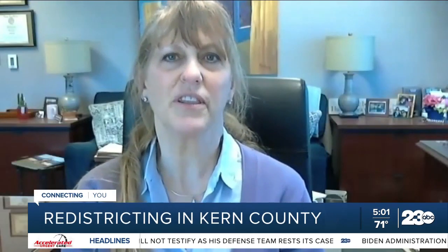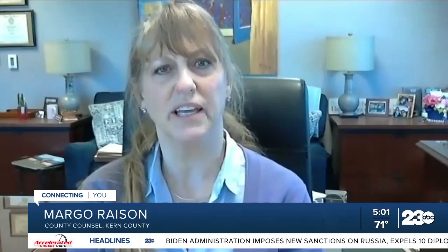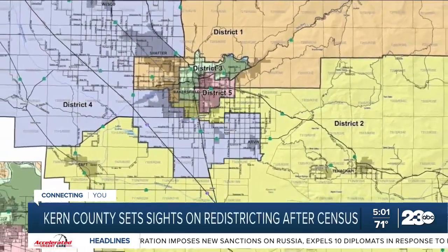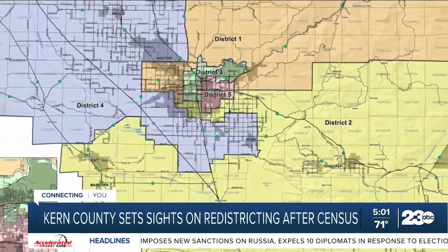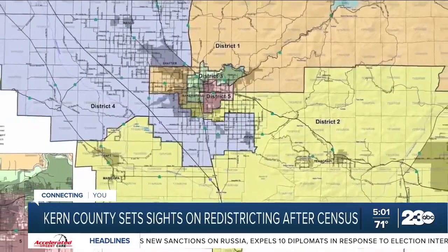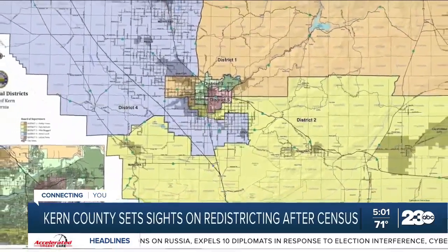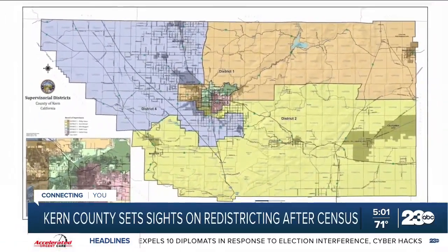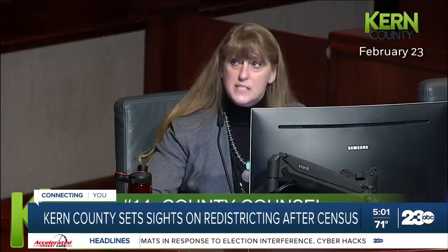It's important so that each district has the same amount of representation and that all voices are heard equally. Within Kern County there are five districts, and each one has a corresponding supervisor, which each district's residents pick through voting. The county determines the boundaries of these districts by examining a range of factors.